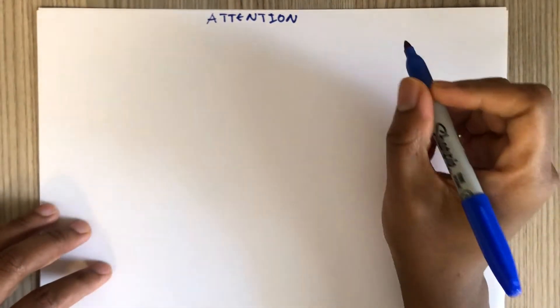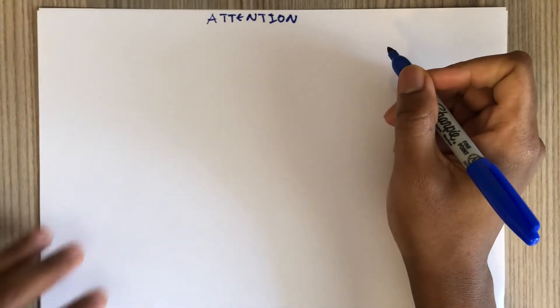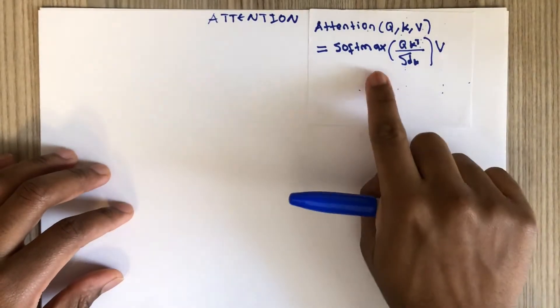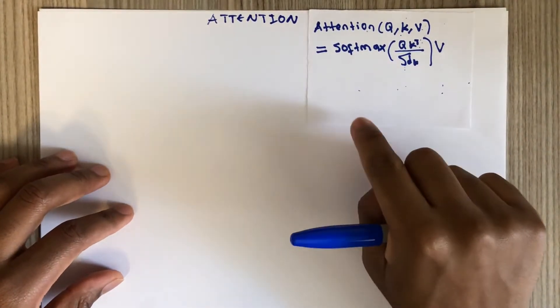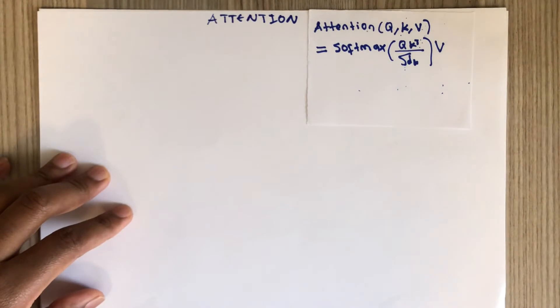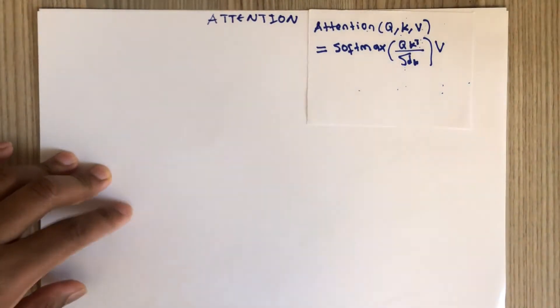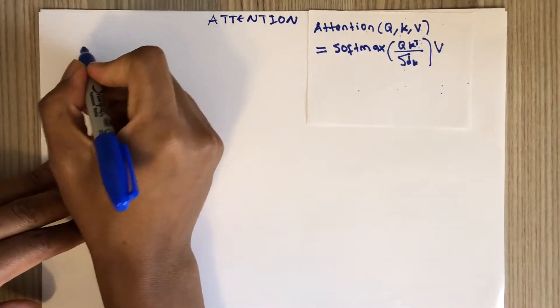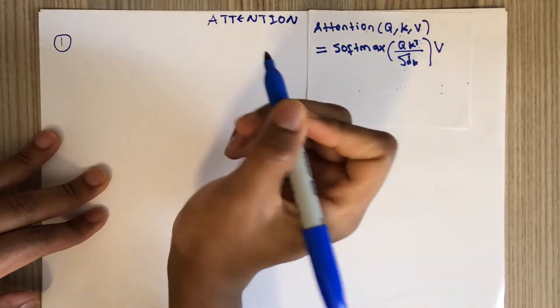Today we are going to look at one-headed self-attention. Attention in the paper 'Attention Is All You Need' is governed by a specific formula. Let's take a simple example to see how attention is calculated.